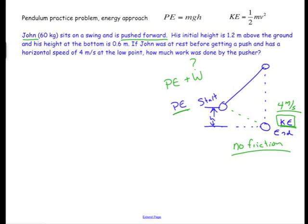So we will say the PE at the top plus this amount of work is going to be equal to the KE at the bottom. So let's do our calculations.